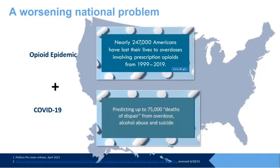Overdose deaths are at record levels. More than 100,000 people died from an overdose during the 12-month period ending in April 2021 — an increase of more than 28 percent during the same period in 2020. New research suggests pandemic effects may lead to 75,000 deaths of despair from drug overdose, alcohol abuse, and suicide. Reports of opioid fatal and non-fatal overdoses have spiked across the country since the coronavirus pandemic began, due in part to reduced access to health care and recovery support services.